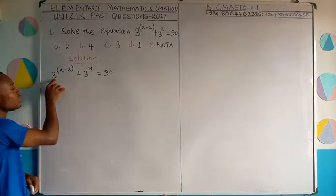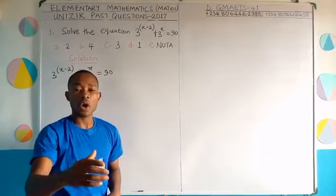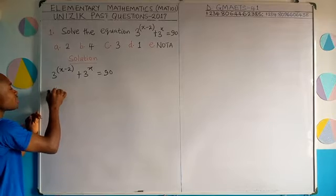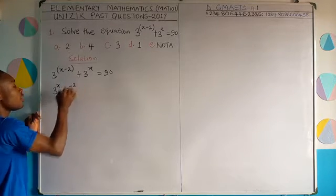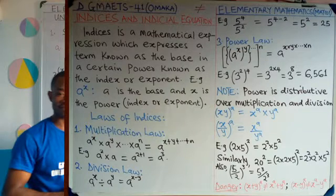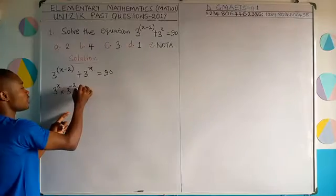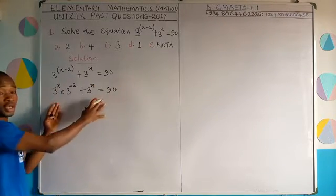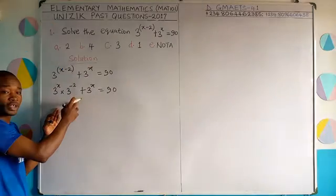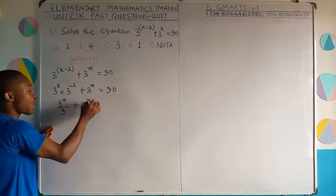We can distribute the base to the powers using the multiplication or division law of indices. I rewrite 3^(x−2) as 3^x times 3^(−2). Now, 3^(−2) by the negative law of indices is 1 over 9. So this becomes 3^x divided by 9, plus 3^x, equal to 90.